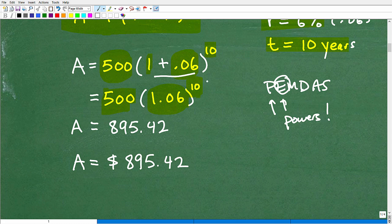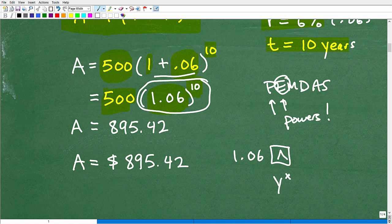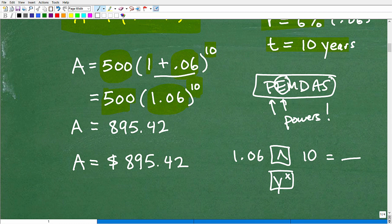All right. So we have 500, 1 plus 06. We're going to add this up. 1 plus 0.06 is 1.06 to the 10th. Now, here is what students will do, many students. They'll take, they'll forget the good old-fashioned order of operations, PEMDAS, right? So parentheses, we did what's inside parentheses. What's the E stand for? That's exponent. That's powers. This is, we've got to take the power here.